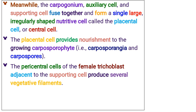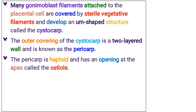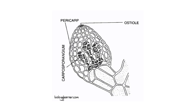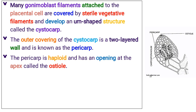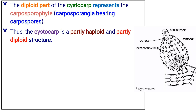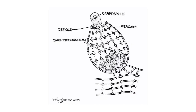The pericentral cells of the female trichoblast adjacent to the supporting cell produce a number of vegetative filaments. Many gonomoblast filaments attached to the placental cell are covered by sterile vegetative filaments and develop an urn-shaped structure called the cystocarp. The outer covering of the cystocarp is a two-layered wall known as the pericarp. The pericarp is haploid and has an opening at the apex called the ostiole. The diploid part of the cystocarp represents the carposporophyte, that is, the carposporangia bearing carpospores. Thus, the cystocarp is a partly haploid and partly diploid structure.